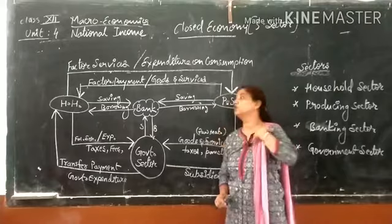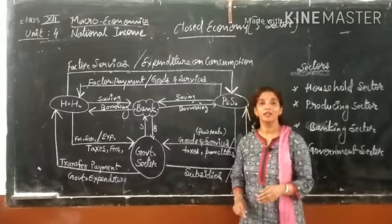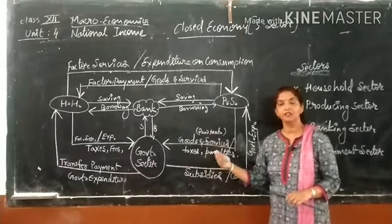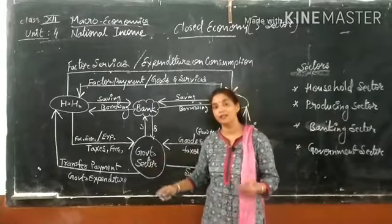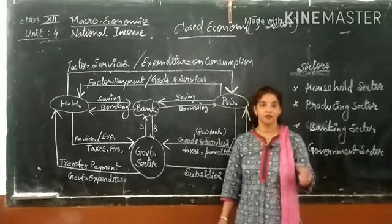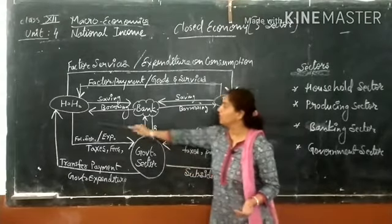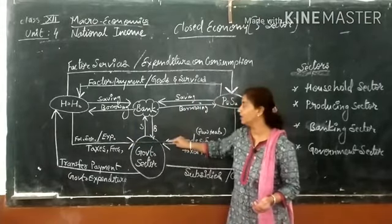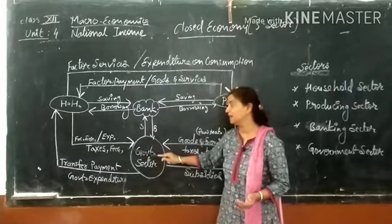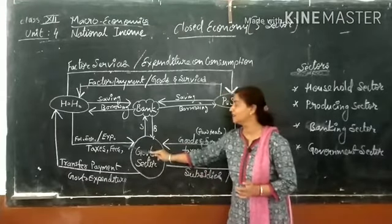We all pay taxes, fees, and penalties to the government sector. For example, when going to the RTO office for a driving license, you pay license or registration fees. If you are not following road rules set by the government, you pay a penalty. All these — factor services, expenditure, taxes, fees, penalties, and registration fees — show arrows pointing towards the government sector and are considered as the income of the government sector.